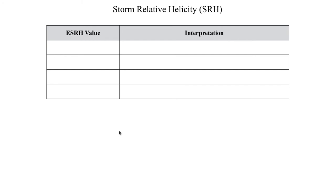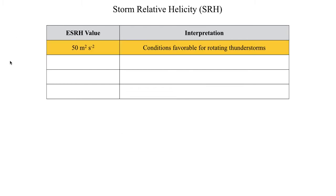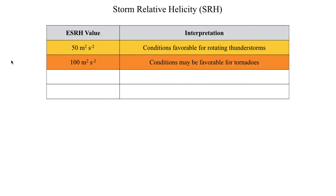So what values signal specific hazards? If you've got an effective storm relative helicity value of at least 50 meters squared per second squared, you might have an environment favorable for rotating thunderstorms — that is, supercells. Values over 100 might signal that conditions are favorable for tornadoes. However, surface to 500 meter helicity has proved to be a better metric than effective storm relative helicity for this purpose.